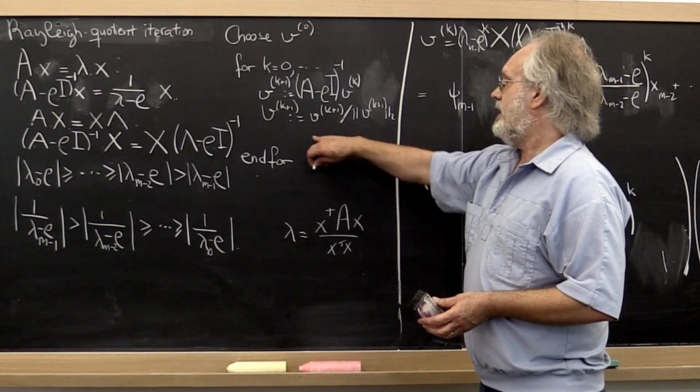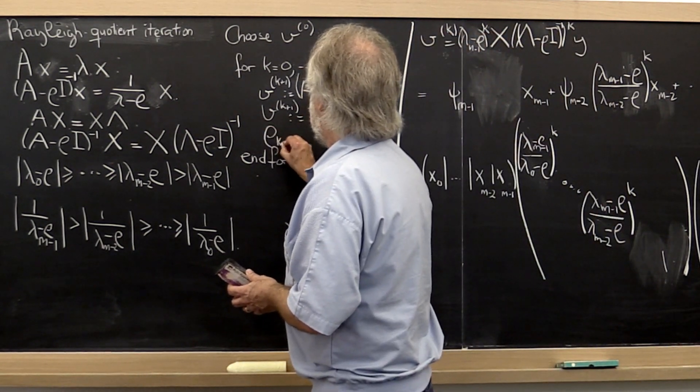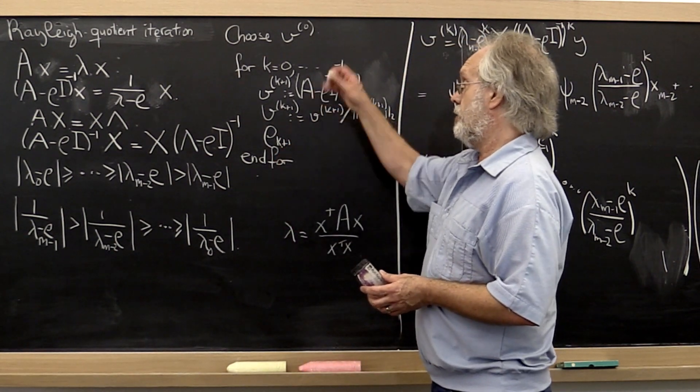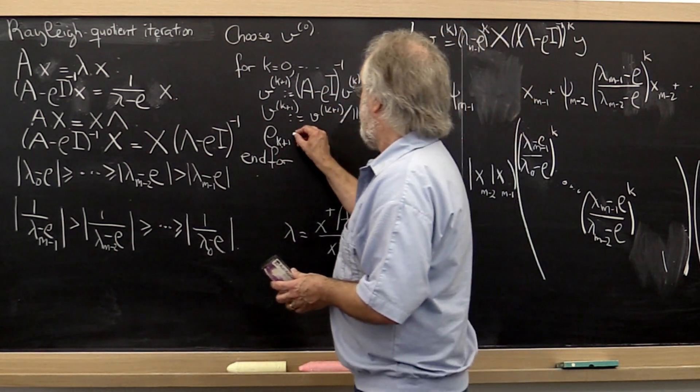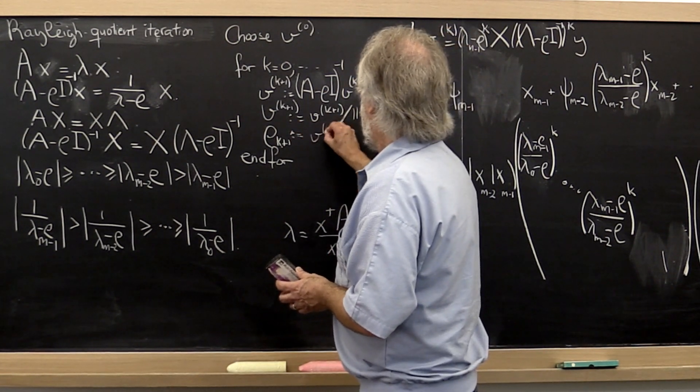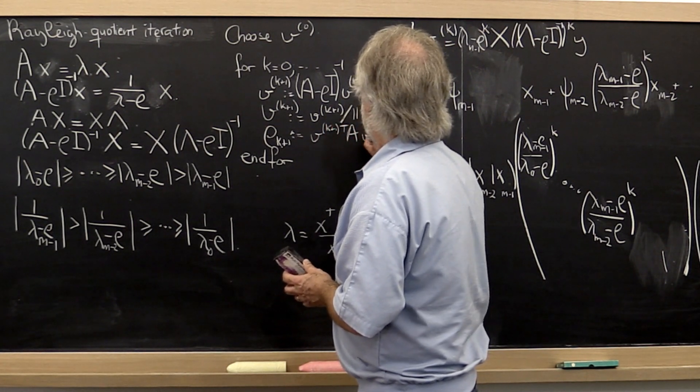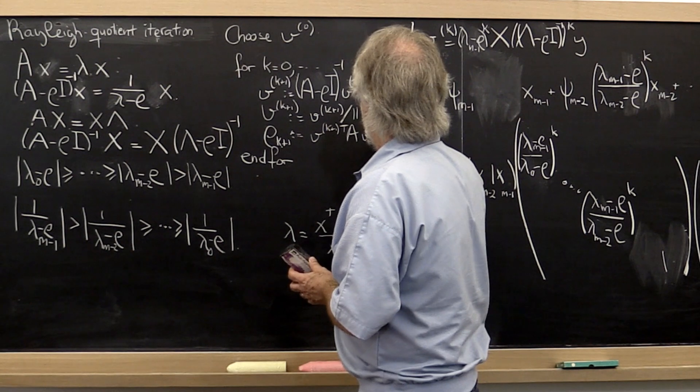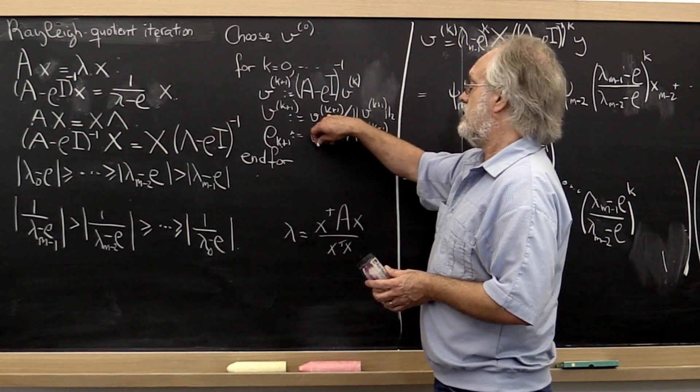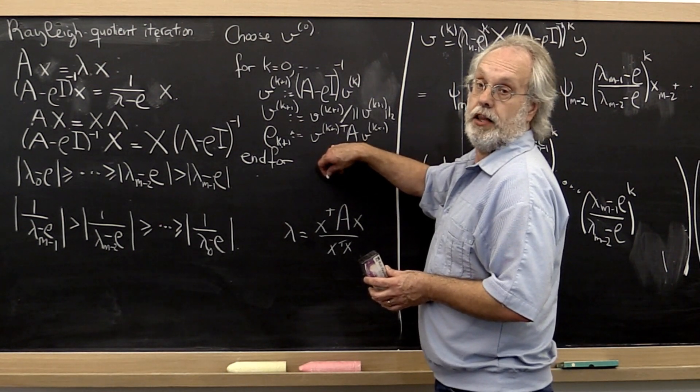then at the end of the iteration we could compute a shift that now is dependent on our iteration. And that shift could be set to v k plus 1 transpose A v k plus 1. Now why don't we have to divide here? Well, because we already normalized our v to be of size 1, length 1.